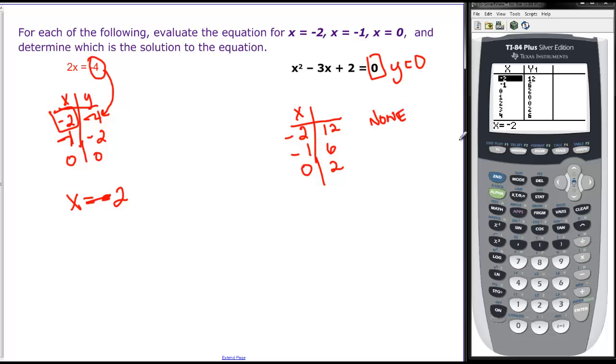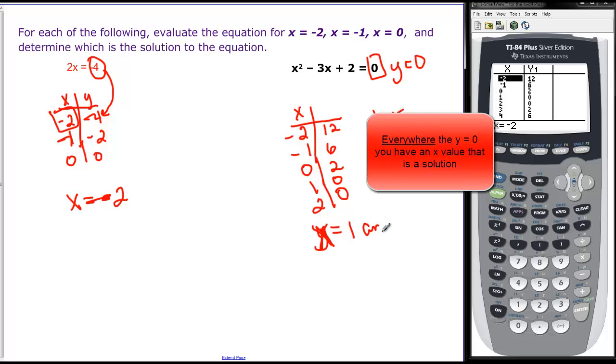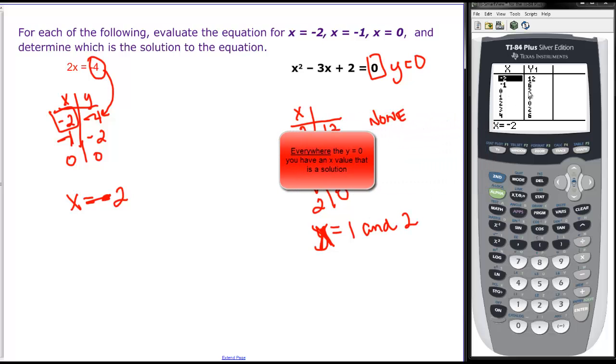But if we look in our table down here at 2 the y value is 0. So we could say that the x value, and at 1. So x is actually equal to 1 and 2, because both of those over here gave me the 0 that I was looking for.